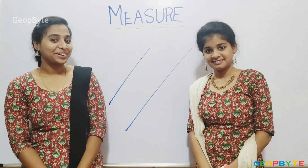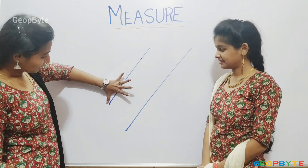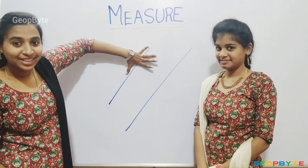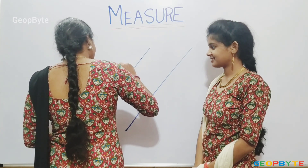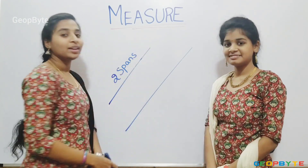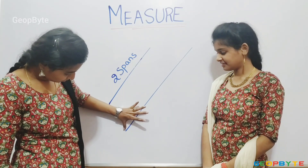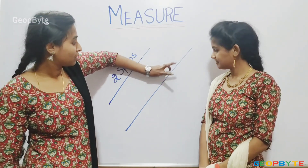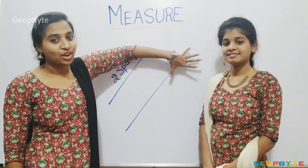Hey kids, now let us measure this line. One, two. This line is two spans of my hand. Now, let us measure this line. One, two, three. This line is three spans of my hand.